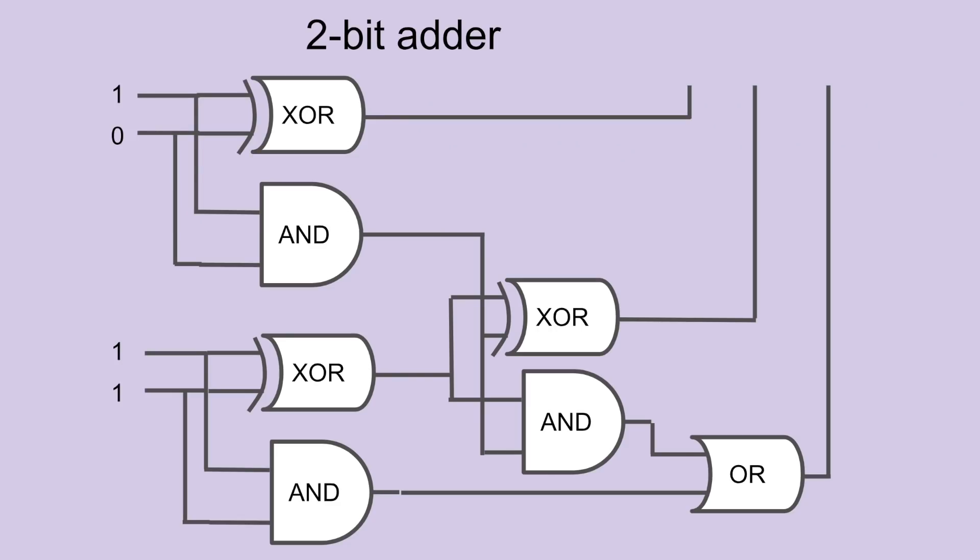Let's enter our inputs 1 0 to represent 2, and 1 1 to represent 3. The top exclusive OR gate yields a 1 since the inputs are 0 and 1, but the AND gate yields a 0. The lower exclusive OR gate yields a 0 since inputs are both 0, whereas the AND gate yields a 1 since both inputs are 1.